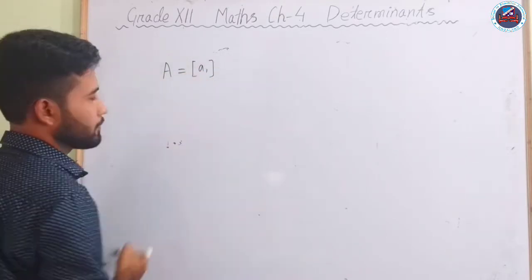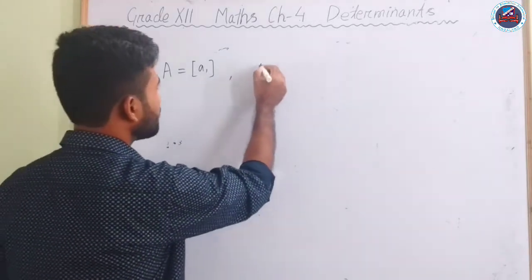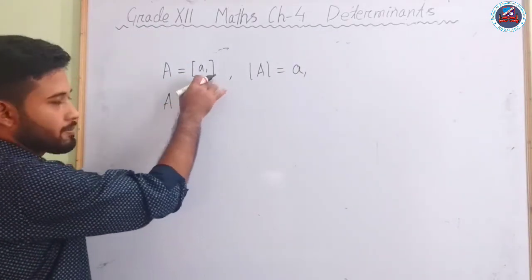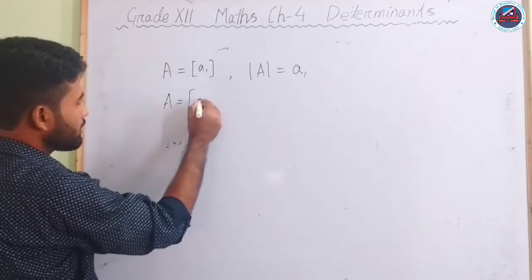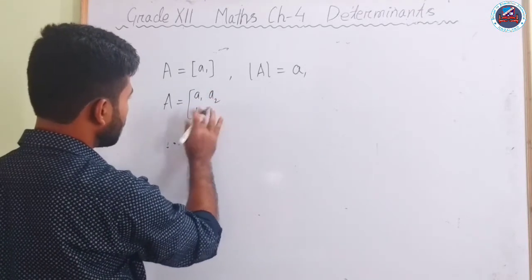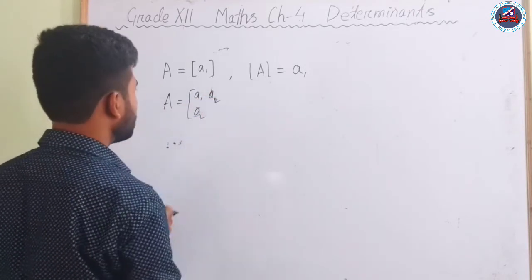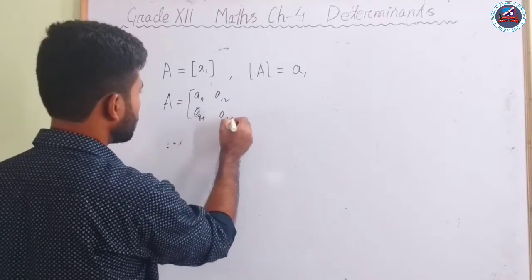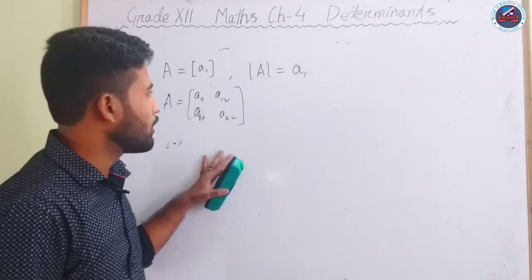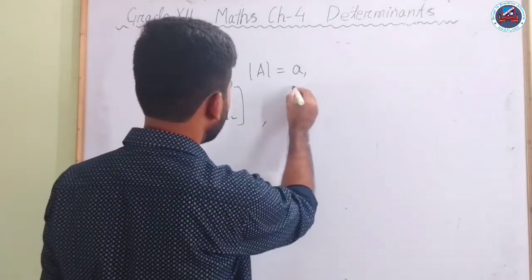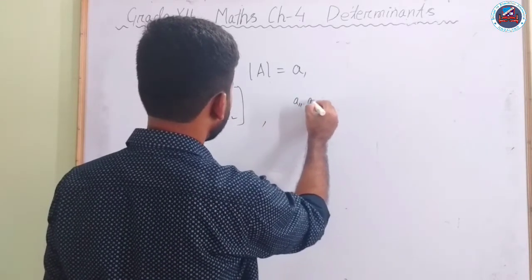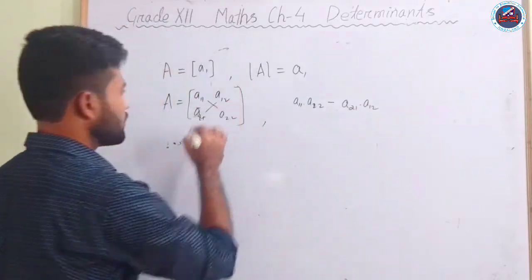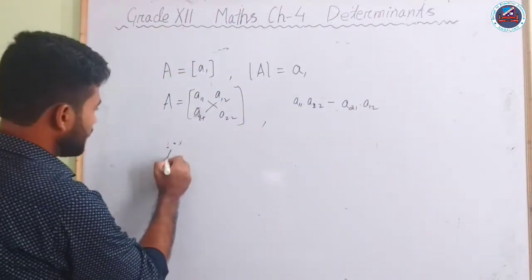There are certain kinds of determinants. If you have a matrix A of order one with element a1, then the determinant of A is a1 itself. If a matrix is of order 2×2, say [a1 a2 / b1 b2], then the determinant is a11·a22 minus a21·a12.